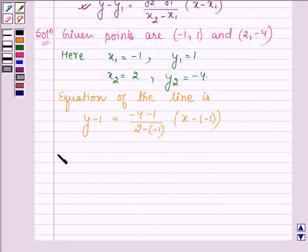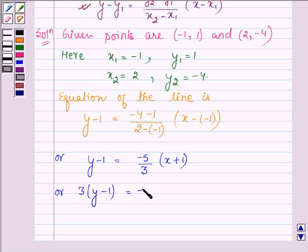This can be further written as y - 1 = (-5/3)(x + 1). Multiplying both sides by 3, we get 3y - 3 = -5x - 5.